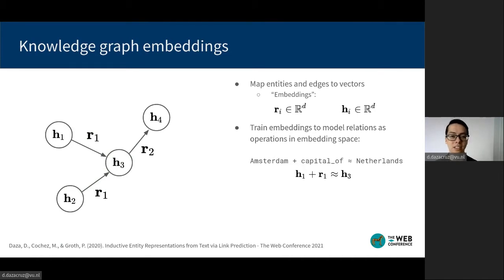This is a translational model known as TransE. And it's an example of how we can model facts in a graph with embeddings. So in spite of their predictive power, this approach has a serious limitation.